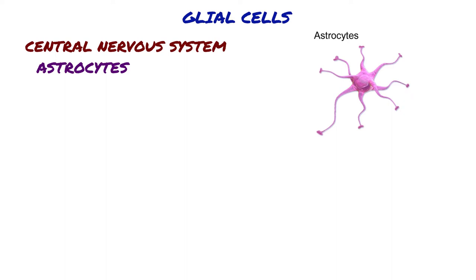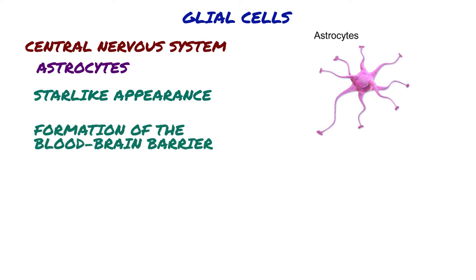Astrocytes are restricted to the central nervous system, and they have elaborate local processes that give these cells a star-like appearance. A major function of astrocytes is to maintain, in a variety of ways, an appropriate chemical environment for neuronal signaling, including formation of the blood-brain barrier. In addition, recent observations suggest that astrocytes secrete substances that influence the construction of new synaptic connections, and that a subset of astrocytes in the adult brain retains the characteristics of stem cells.